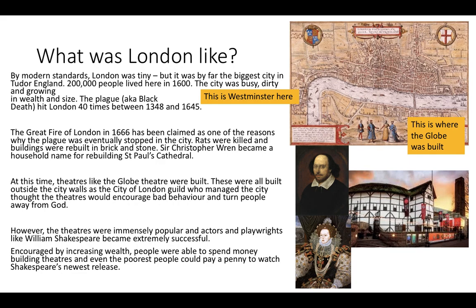Let's focus on London for a second. By modern standards, London was actually tiny. It was still the biggest city in Tudor England and 200,000 people lived there in the 1600s. The city was busy, dirty and growing in wealth and size. The plague hit London between 1348 and 1645 and it hit it 40 times, which just shows the quality of the city — it's a place where disease could spread very easily.